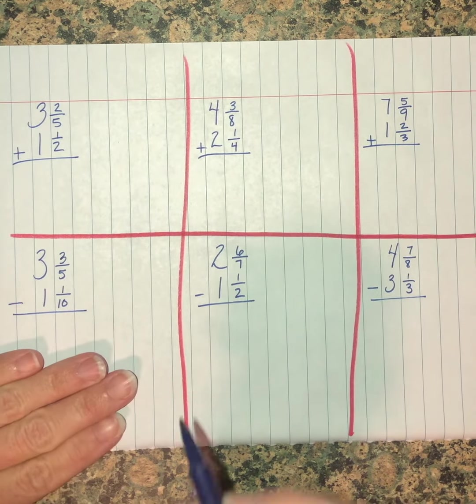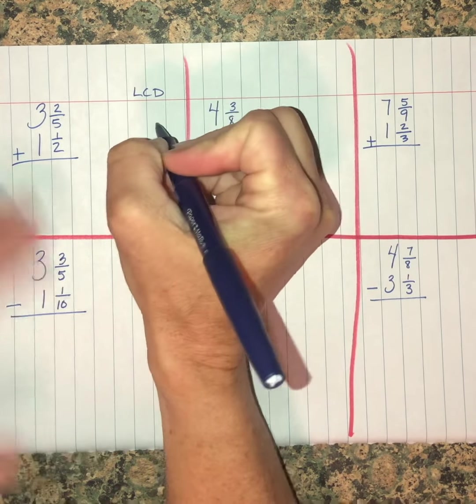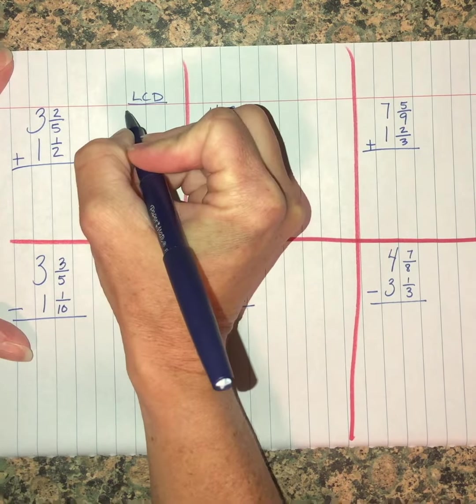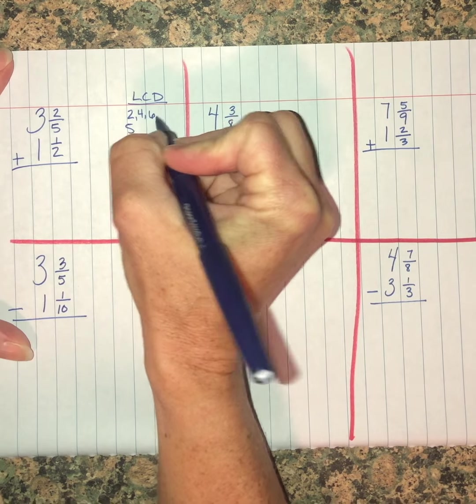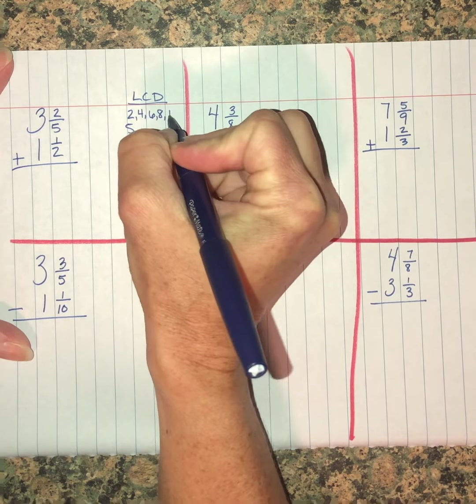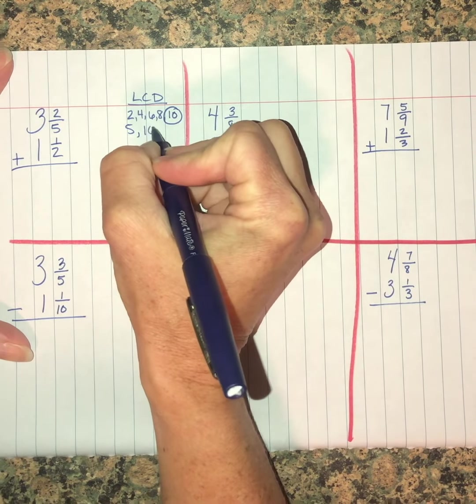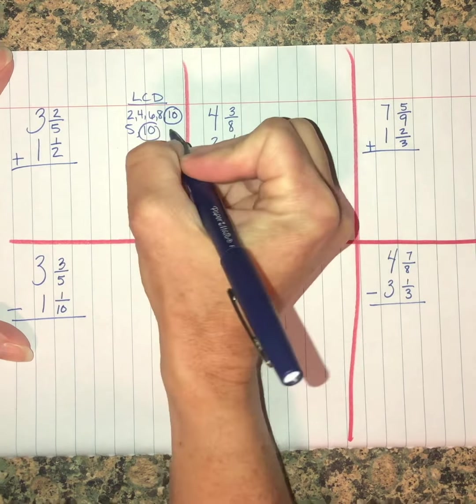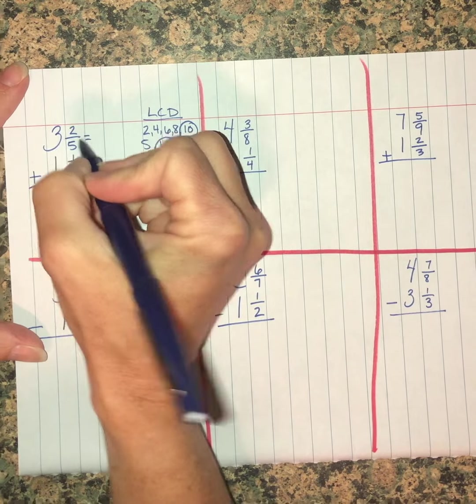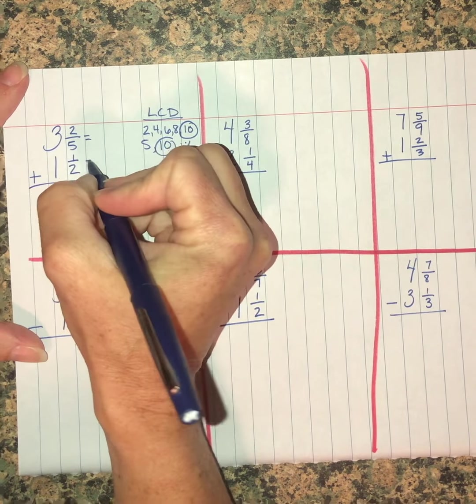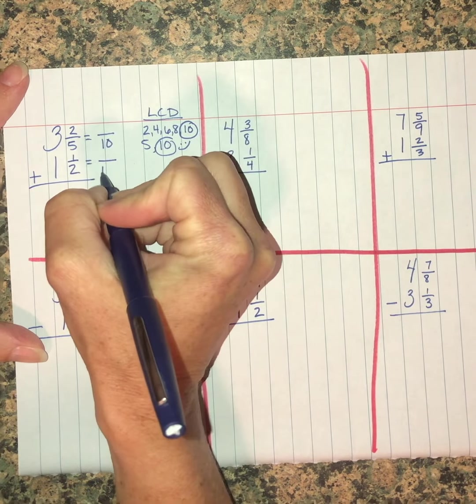So I'm going to start with the first one: three and two-fifths plus one and one-half. We're going to find our LCD for two and five. Two, four, six, eight, ten. I'm going to stop at ten because I know ten is a multiple of five, so ten is my least common denominator. I'm going to go ahead and just ignore the whole numbers for right now. We can take care of those at the end. This is the part you have to worry about first.